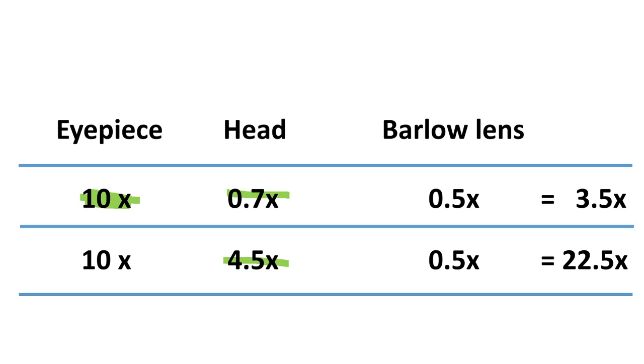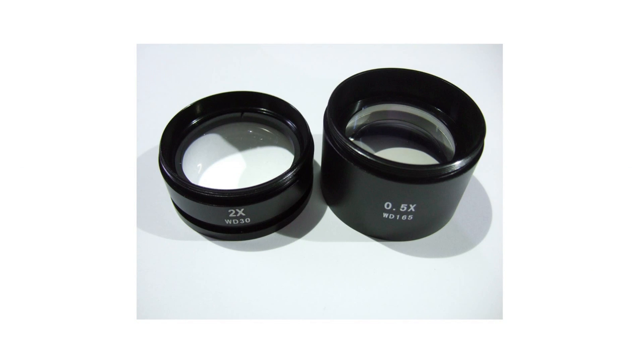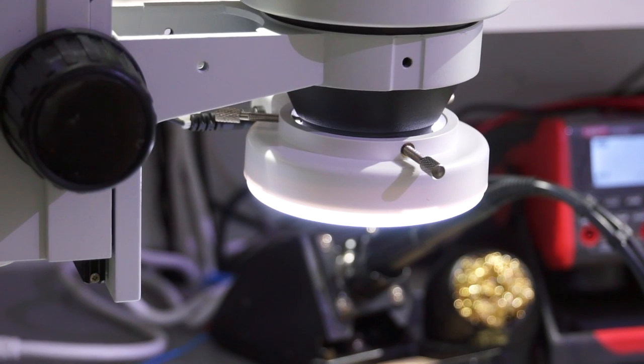This is why you can combine this configuration with a Barlow lens with a magnification factor of 0.5. Now, we are at 3.5 to 22.5, which in my daily work is absolutely sufficient. I could have saved the money for a x2 Barlow lens, which goes up to magnification of 2 times 45 is 90.